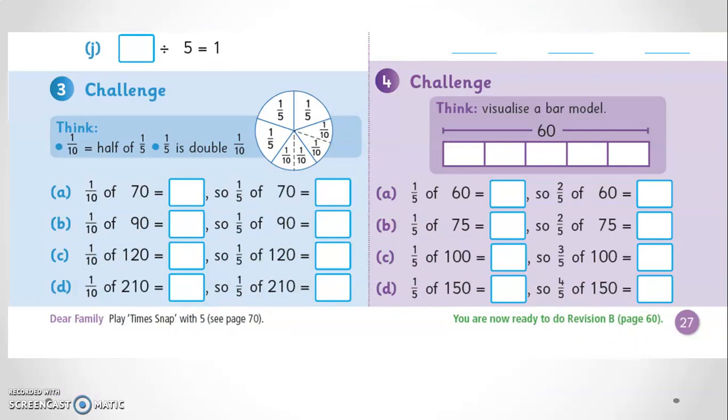Where appropriate, links are also made to other parts of maths outside of the basic number facts. For example, here the child is enabled to recognize that if one-tenth of 70 is seven, then one-fifth of 70 must be double that, or 14, since one-fifth is twice the size of one-tenth.